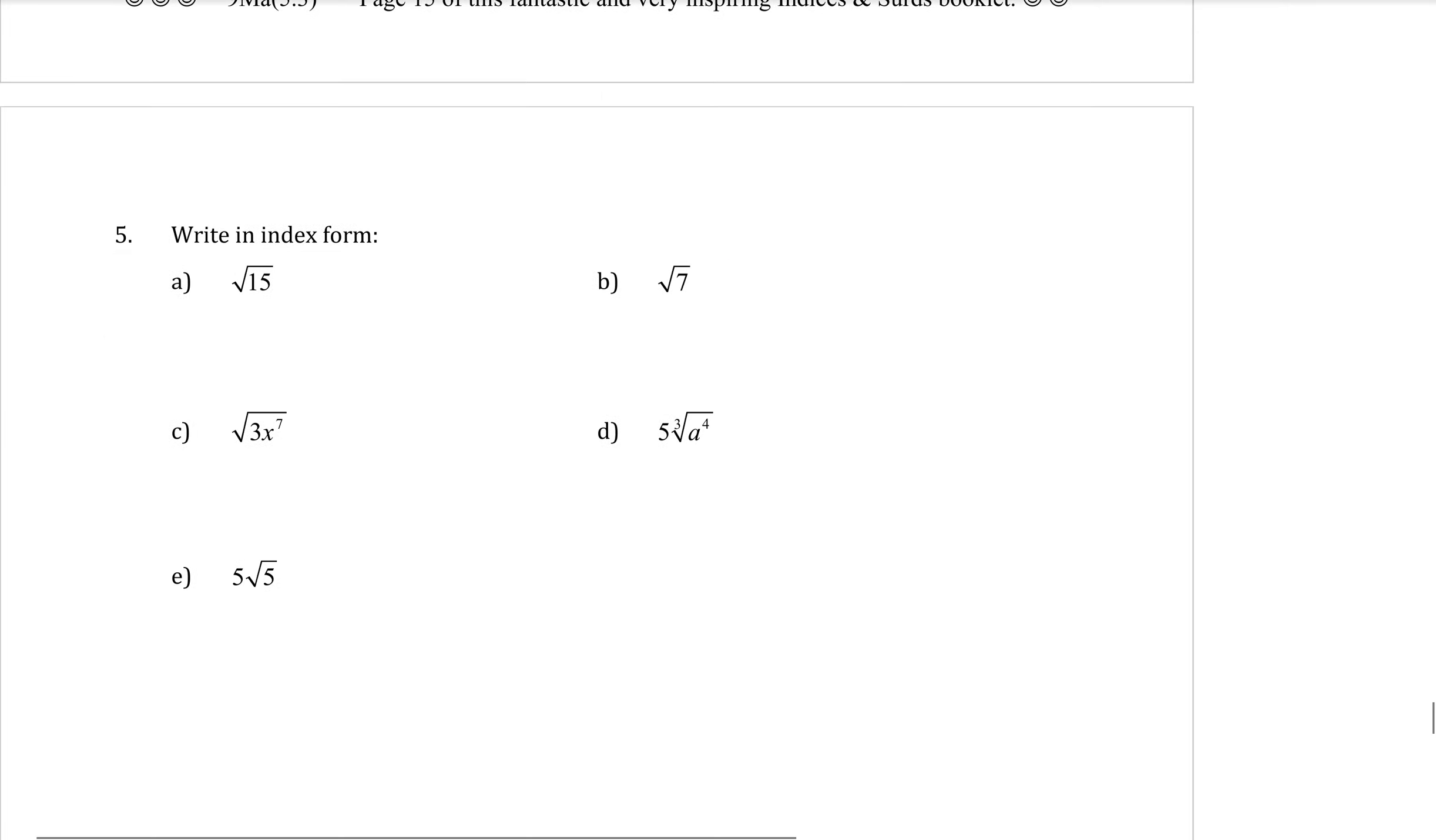Write in index form. Each one of these have a square root. And we want to put them back into fractional powers. So the first one is a normal square root. A normal square root is always the same as a power of a half. So that's the same for B. 7 is the base. And it's a power of one half.